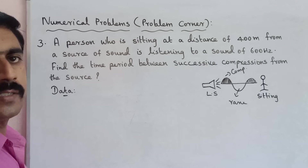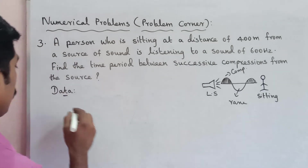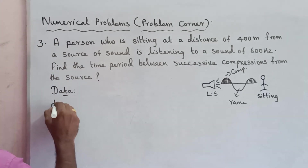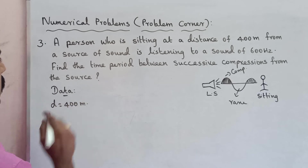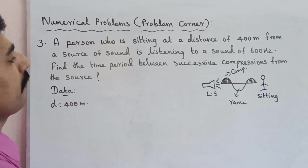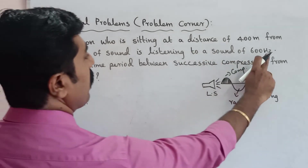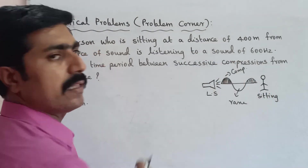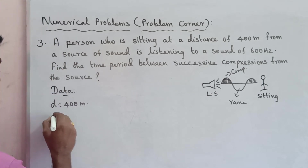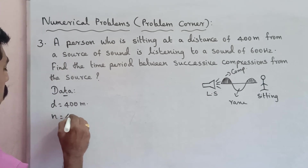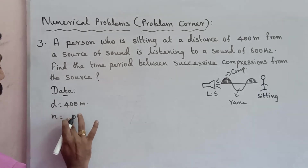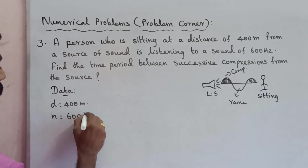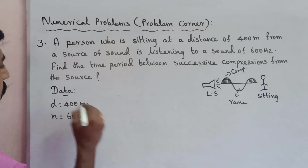The given data: distance D is equal to 400m. The frequency — the unit of frequency is Hertz — so frequency N is equal to 600 Hz.